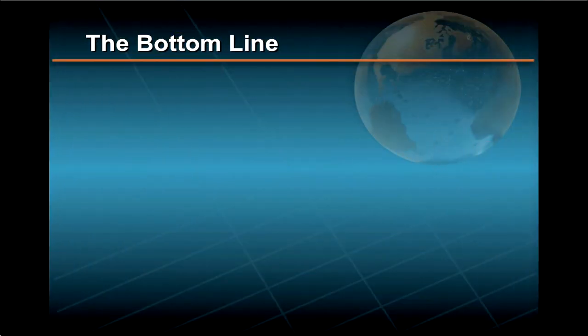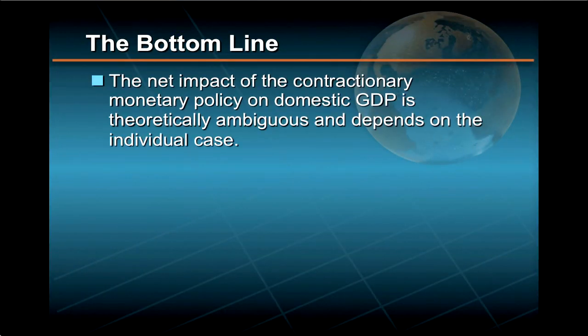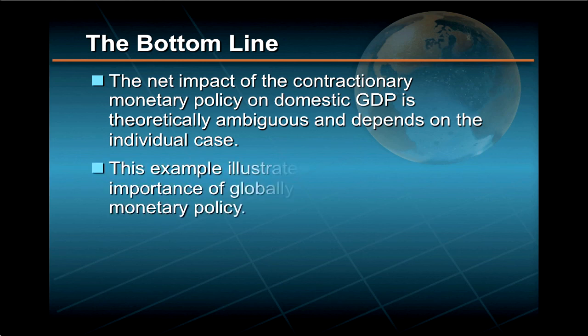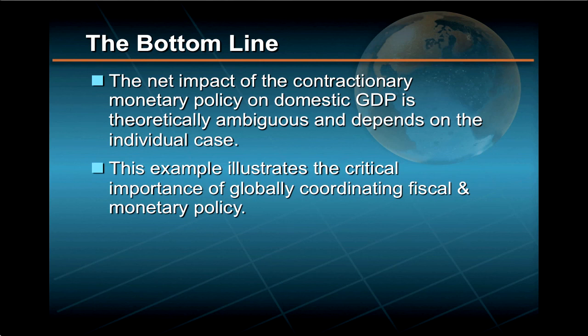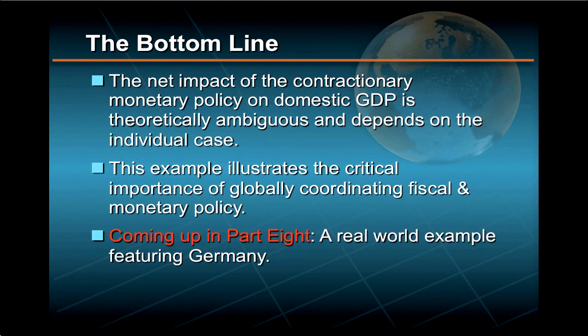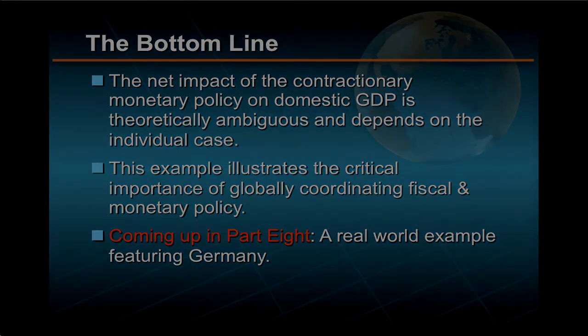Our bottom line here is that the net impact of contractionary monetary policy on domestic GDP is theoretically ambiguous and will depend on the individual case. However, what should be unambiguous from this example is the critical importance of globally coordinating not just fiscal policy but monetary policy as well. A more real-world example should strongly reinforce this point, at the same time that it highlights the difficulties of achieving such coordination.